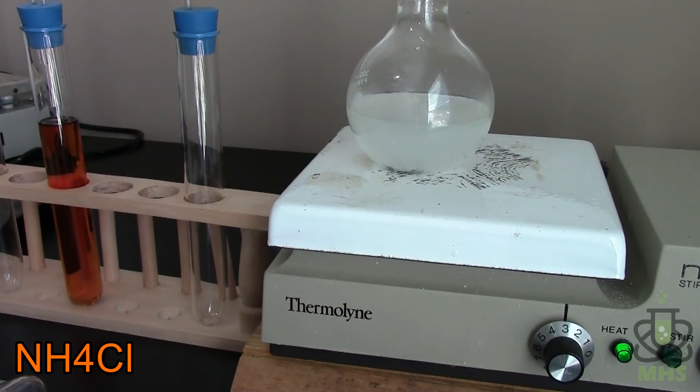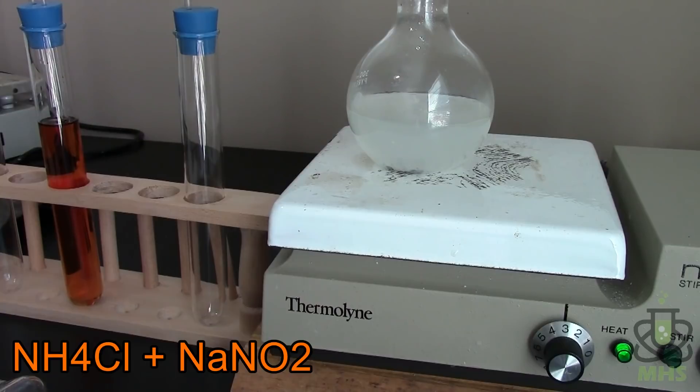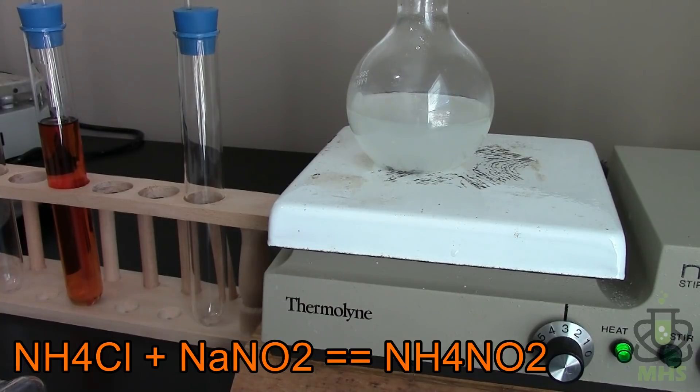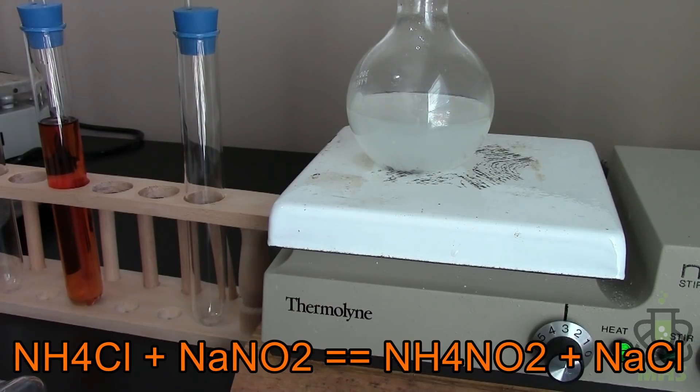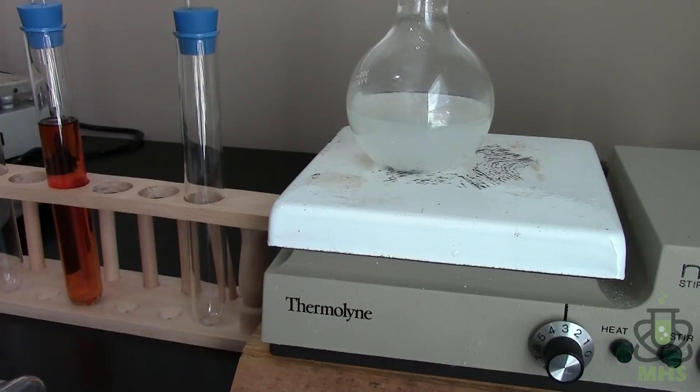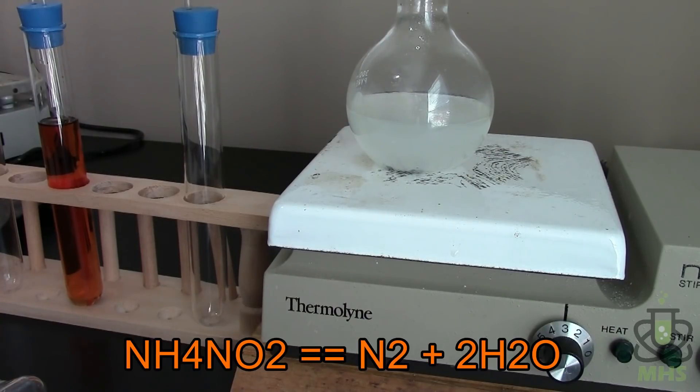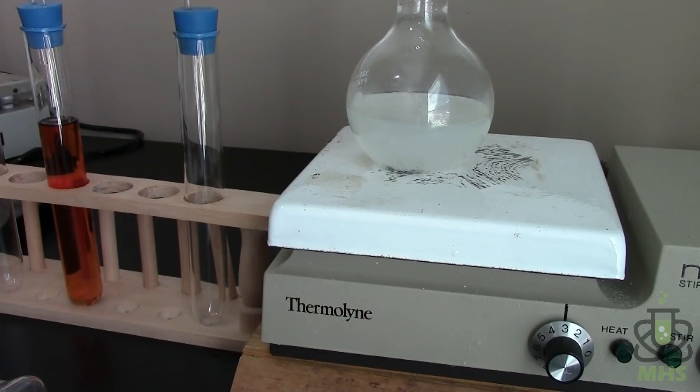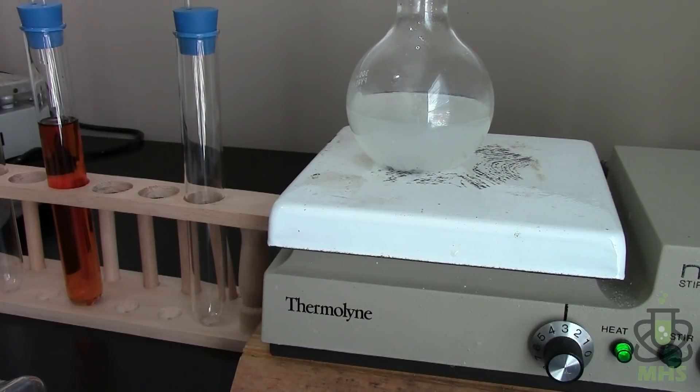We're reacting ammonium chloride and sodium nitrite and these produce nitrogen in a two-step reaction. So first step it makes ammonium nitrite and sodium chloride or table salt and then the ammonium nitrite turns out is pretty unstable especially at higher temperatures. So that will decompose and turn into nitrogen and water. And so that means the overall reaction is ammonium chloride and sodium nitrite gives us salt water and nitrogen gas. So it's a nice clean reaction.